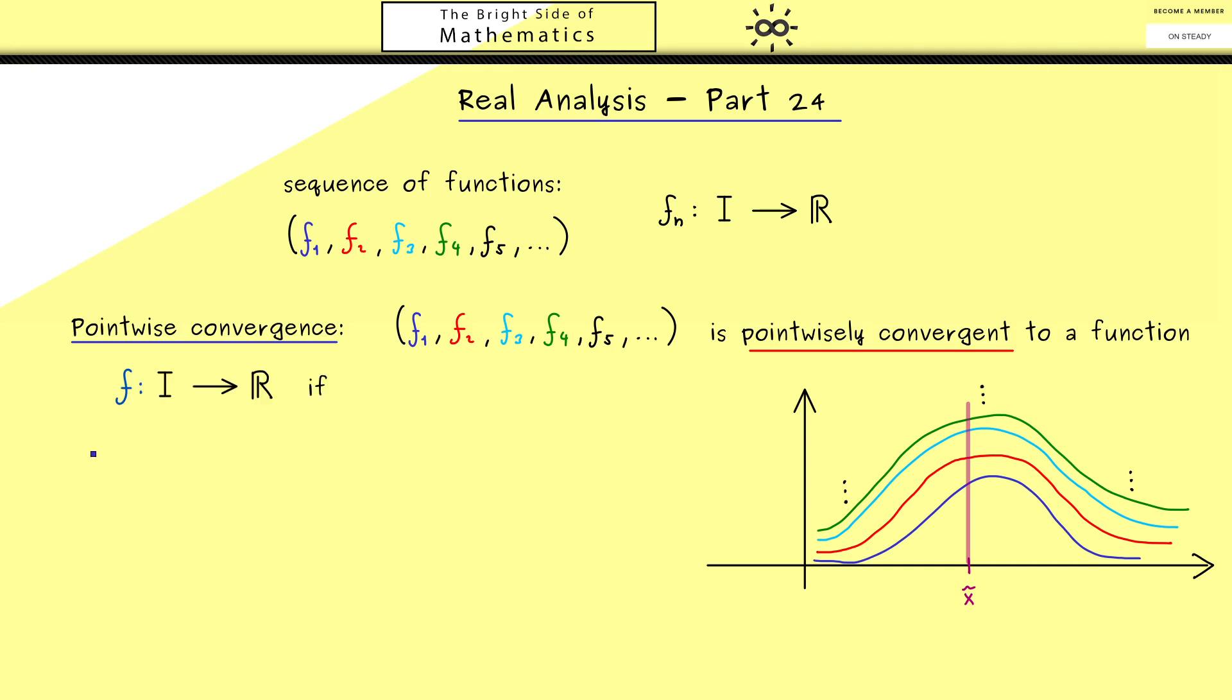For the name for this limit function we can just choose f. What we need here is that no matter which x tilde we take from I, we get a convergent sequence for the values, and then the limit we just call f of x tilde. The important part here is that we have this property for all x tilde.